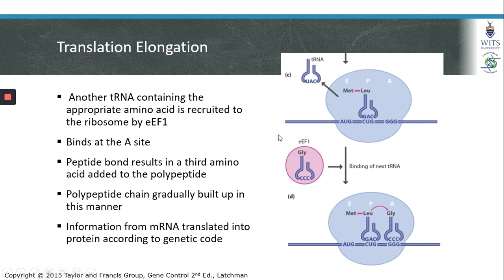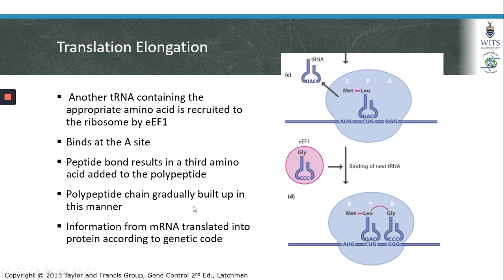This results in a peptide bond between methionine and leucine and an empty A site in the ribosome. Another transfer RNA containing the appropriate amino acid — in this case the codon is GGG and the corresponding amino acid is glycine — will be recruited to the ribosome by EEF1 again. The next amino acid and transfer RNA will occupy the A site within the large ribosomal subunit, and the large ribosomal subunit will catalyze the formation of a peptide bond between these two neighboring amino acids. This is how elongation continues sequentially, gradually building up the polypeptide chain, translating the information from the mRNA into protein according to the genetic code.